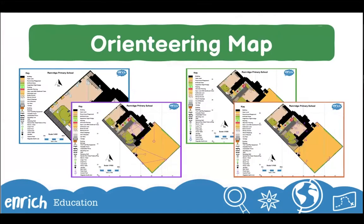These are some examples of orienteering maps of a school site. Maps are custom-made for each individual school. Orienteering maps are based on Ordnance Survey maps, slightly simplified, with grid lines and shading to show different types of areas — for example, black denotes a building. The maps use symbols, a key, and a scale, and the map on the right shows numbered orienteering control points located around the school site.